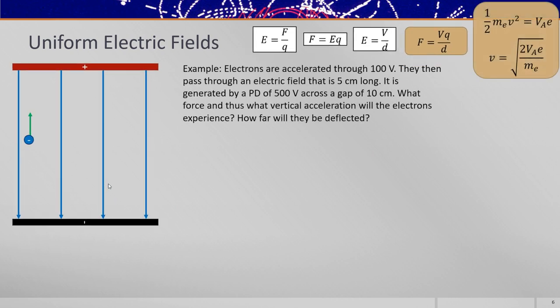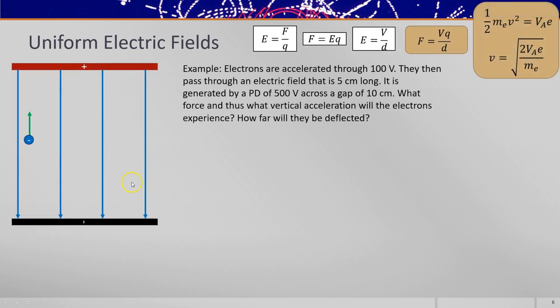So let's do an example calculation. If the electrons were accelerated through 100 volts again and they travel through the field that's 5 centimeters long, there's 500 volts across the two plates and there's a 10 centimeter gap. Can we work out their acceleration and how far down the field or up the field, if this is an electron, it would be deflected?